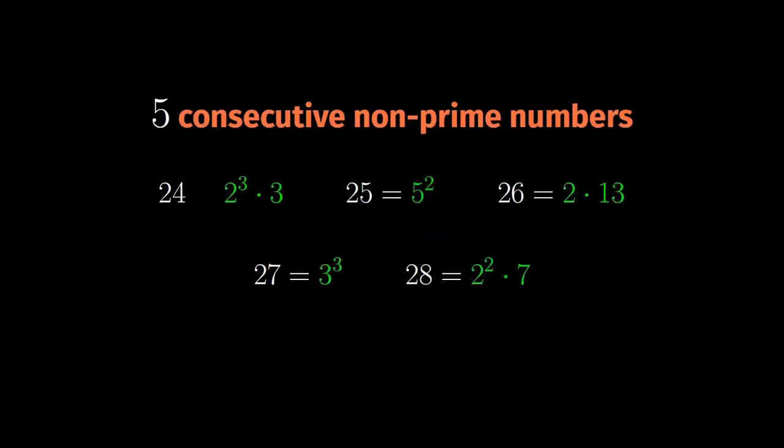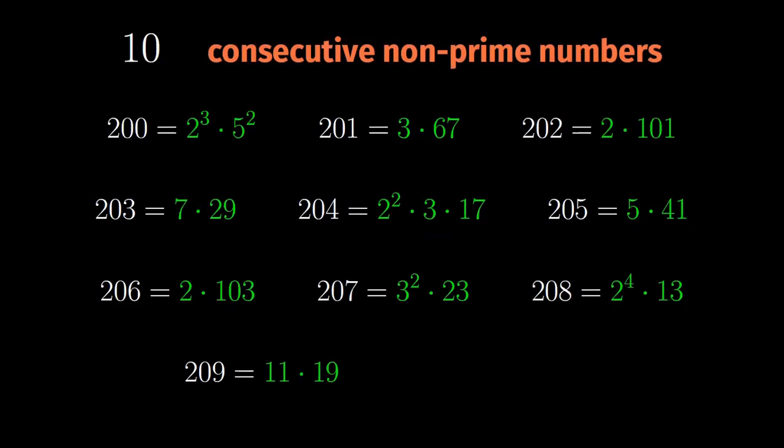Now, let's jump to 10 consecutive non-prime numbers. The list I found starts with the number 200 and ends with the number 209. Like before, I factored each of them, so you can easily check that I am not lying and none of those numbers is prime.